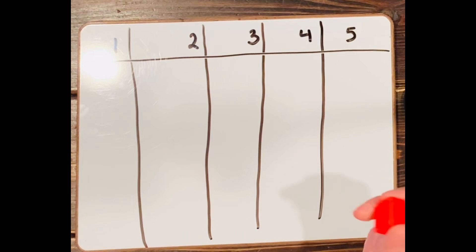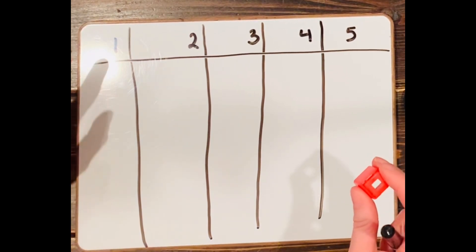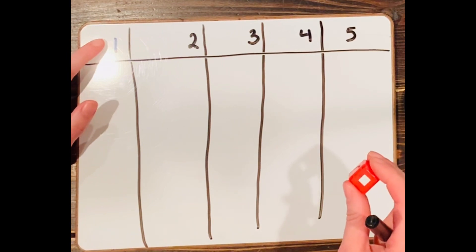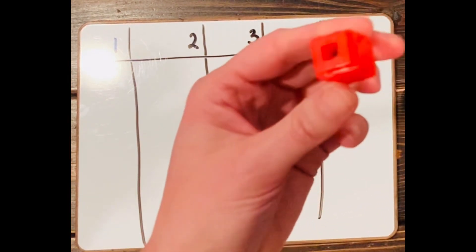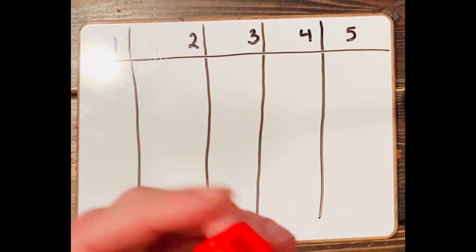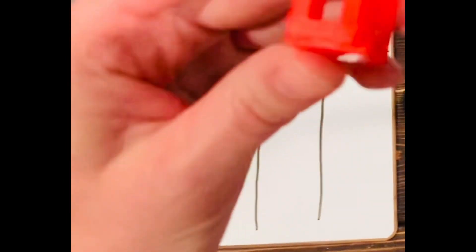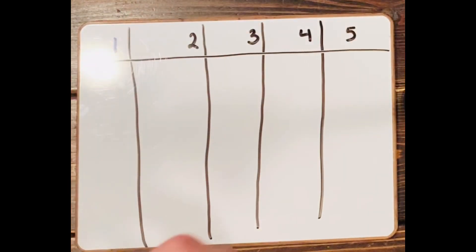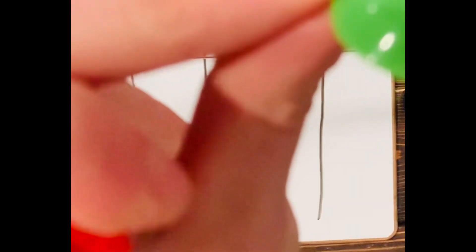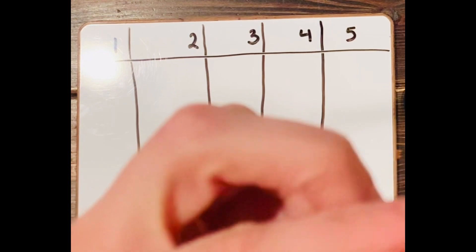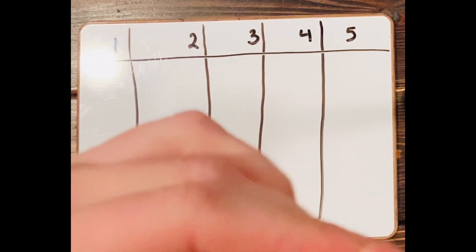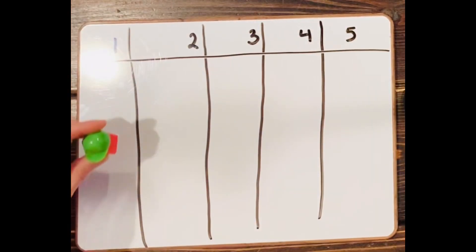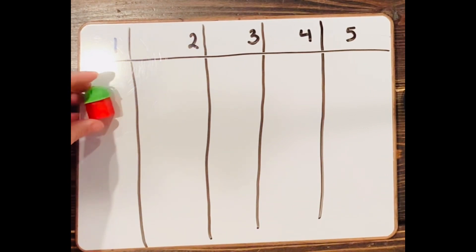Are you ready to build numbers and addition sentences with me? Starting with building number one, we're using linking cubes today to build numbers. And one is easy because all we need is one, right? One linking cube. And look at how cute this is. I have a little one hat that I'm going to put on my little man here for number one. Okay, so I built my number one man.